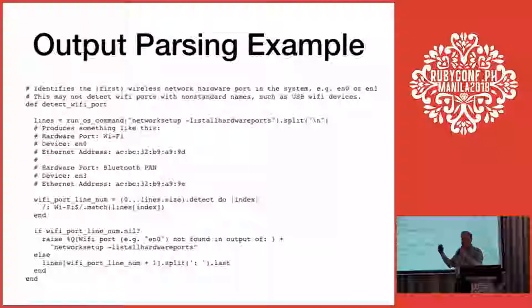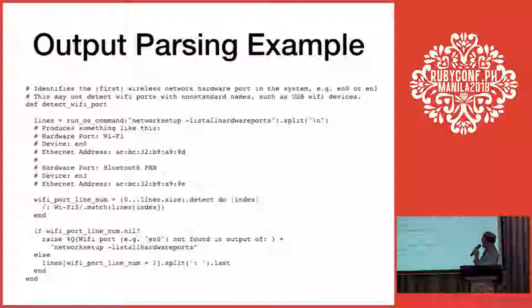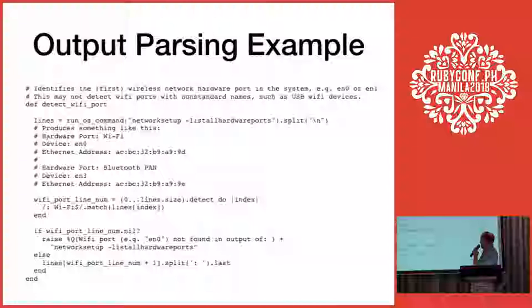Here's an example of code that parses output of a Mac OS command line utility — the code that lists the network ports. The method is called detect_wifi_port. We get the output as a single string and turn it into an array of lines. We find the line number containing 'Wi-Fi' using a regular expression, raise an error if it's not found, and if found, take the next line, split it by a token, and take the last token — which will be EN0.